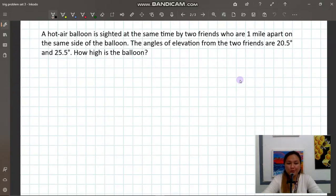Okay, so here is the problem that we will be solving together in this video. We have a hot air balloon sighted at the same time by two friends who are one mile apart on the same side of the balloon. The angles of elevation from the two friends are 20.5 degrees and 25.5 degrees. How high is the balloon? So we need to identify the height of the balloon from the ground.